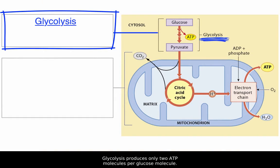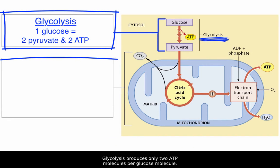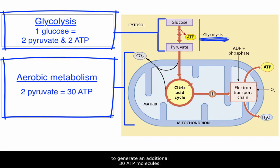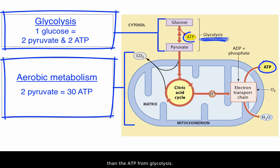Let's compare the two mechanisms of energy production. Glycolysis produces only two ATP molecules per glucose molecule, while aerobic metabolism extracts energy from the two resulting pyruvate molecules to generate an additional 30 ATP molecules. Notice how that difference is indicated — the ATP from aerobic metabolism is drawn bolder than the ATP from glycolysis.